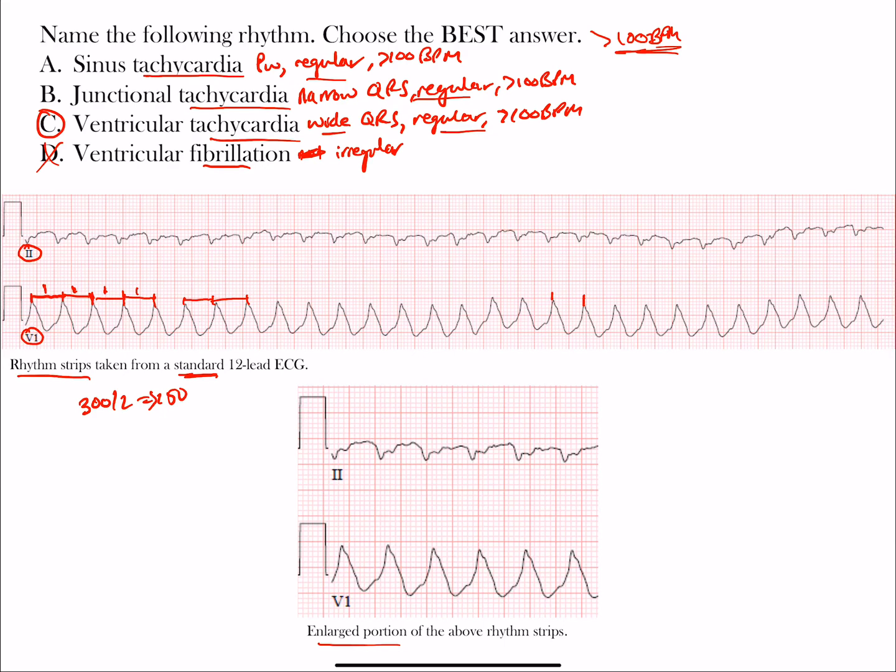You can also count the complexes going across and multiply that by six - that's another way you can do that. The rate is obviously a fast rate, but it's not junctional because the complexes are not narrow. It's a regular and fast rhythm, so junctional rhythm is not correct.